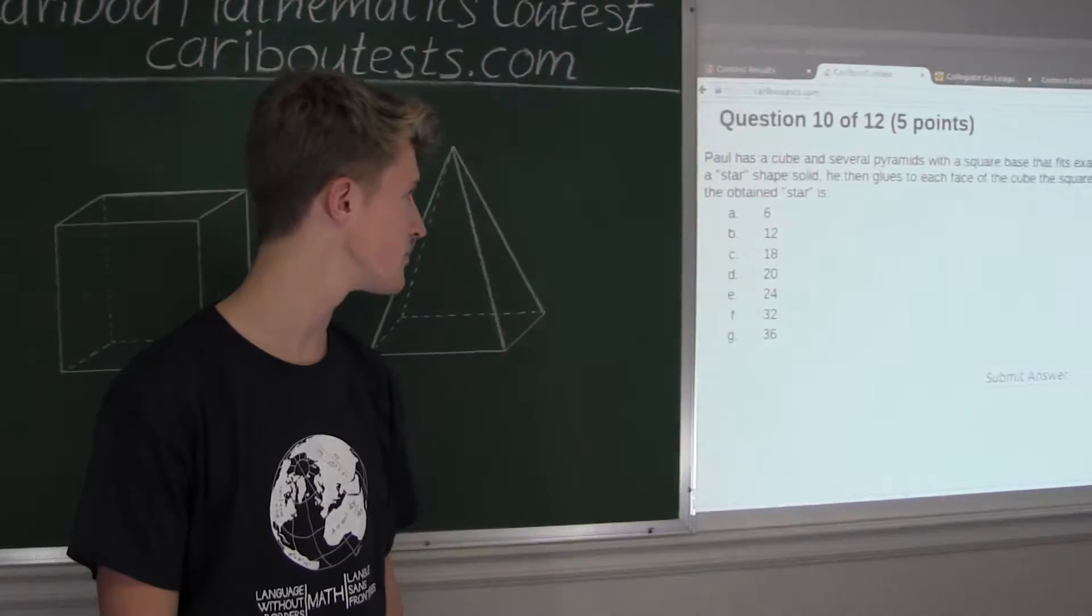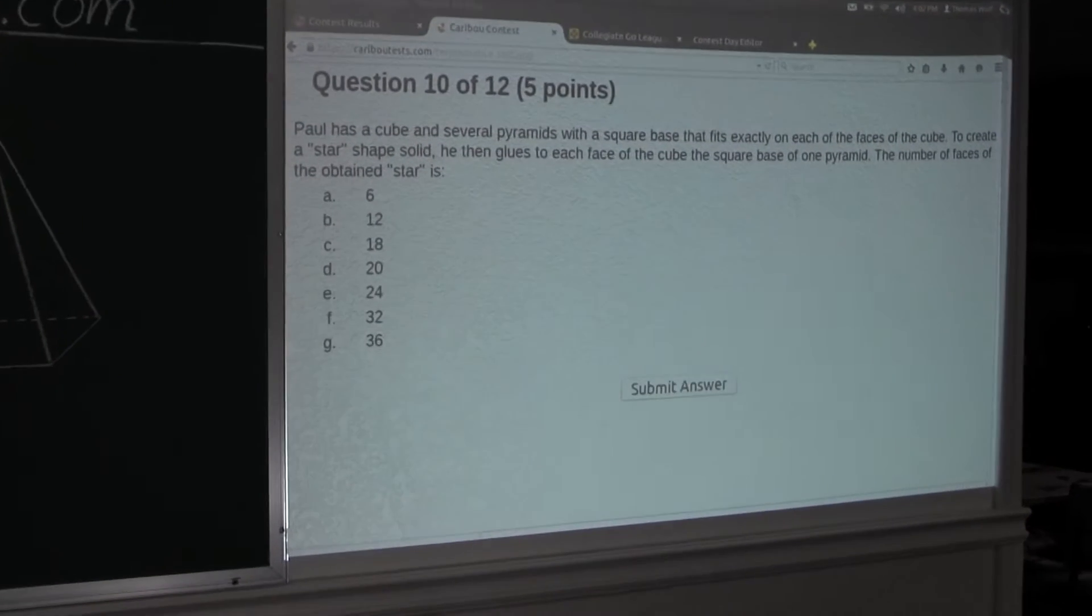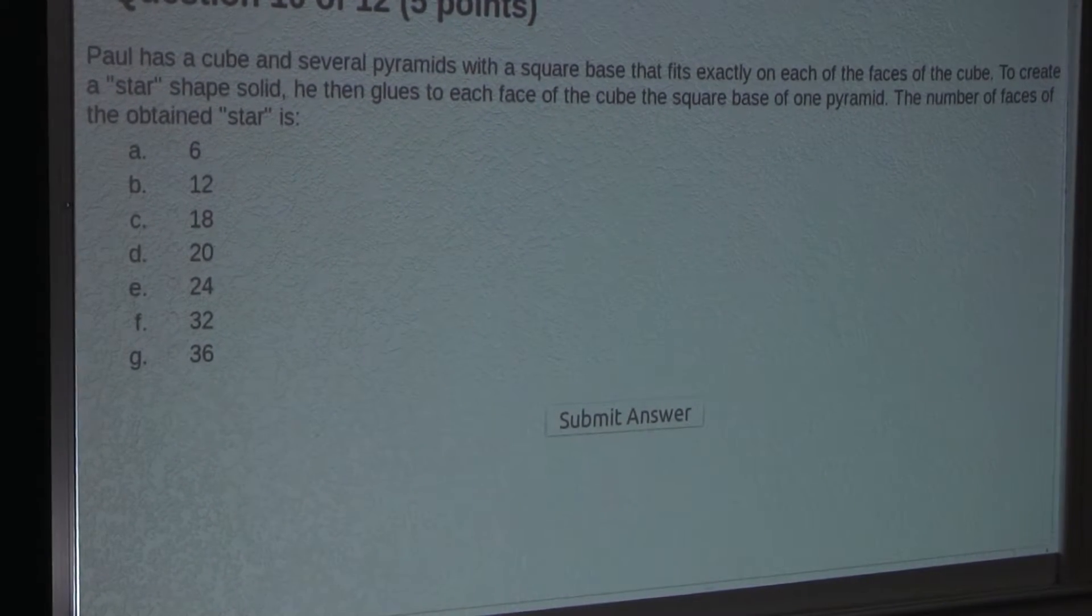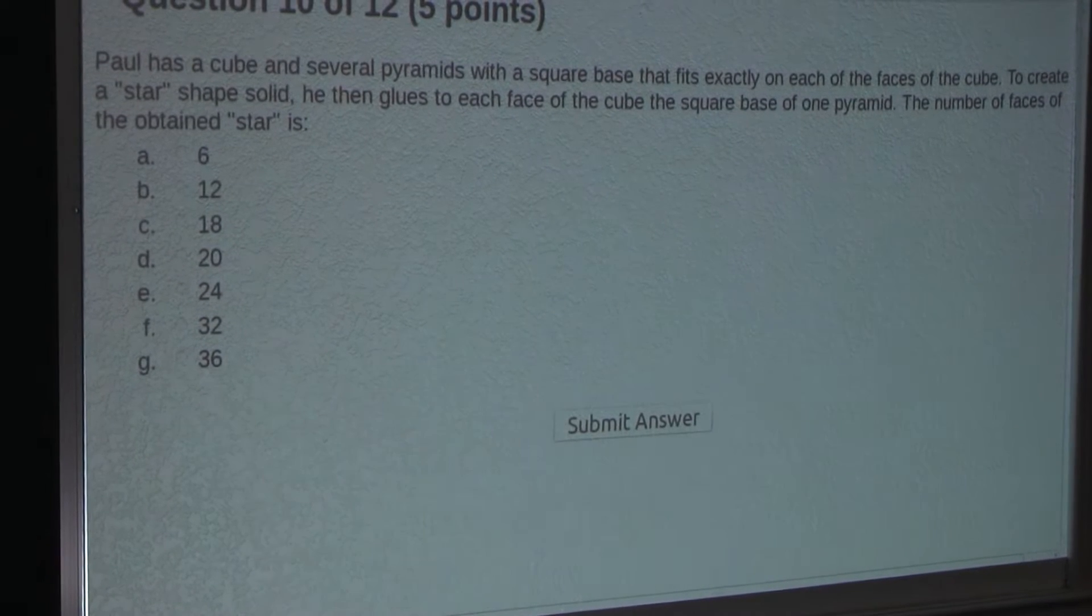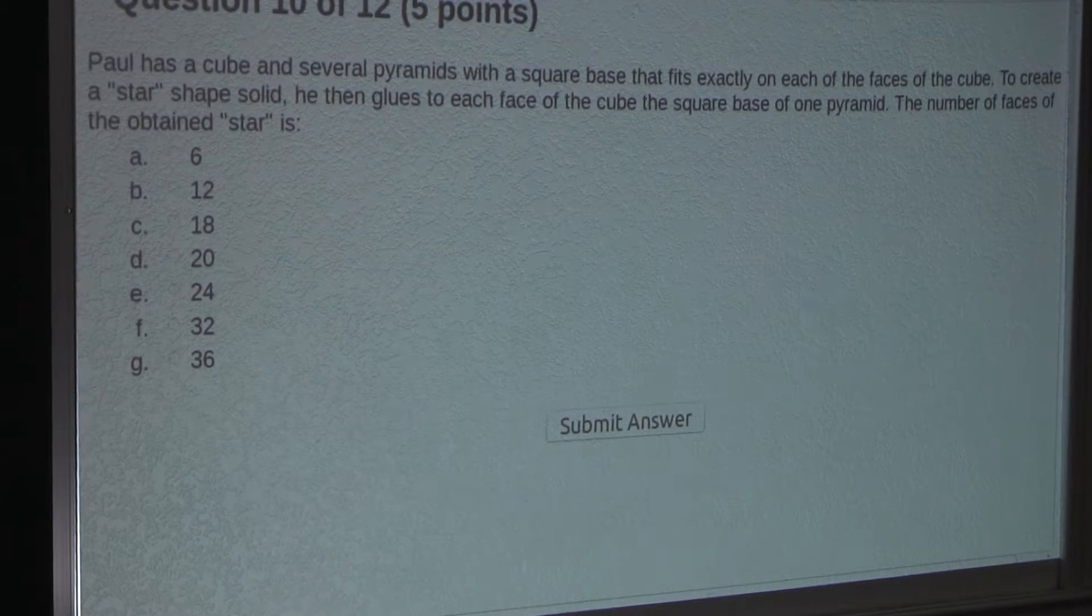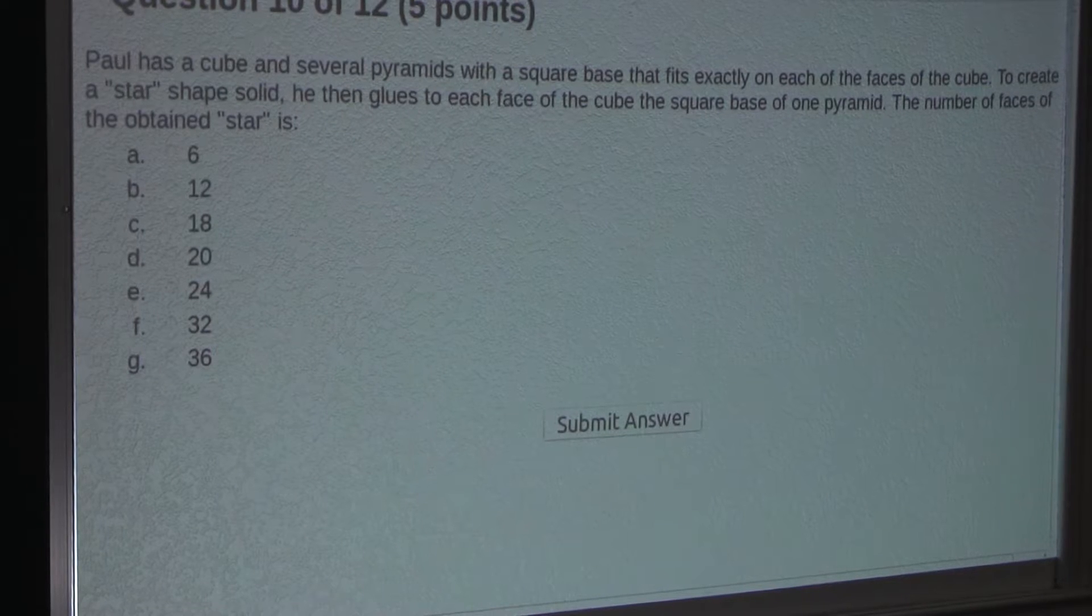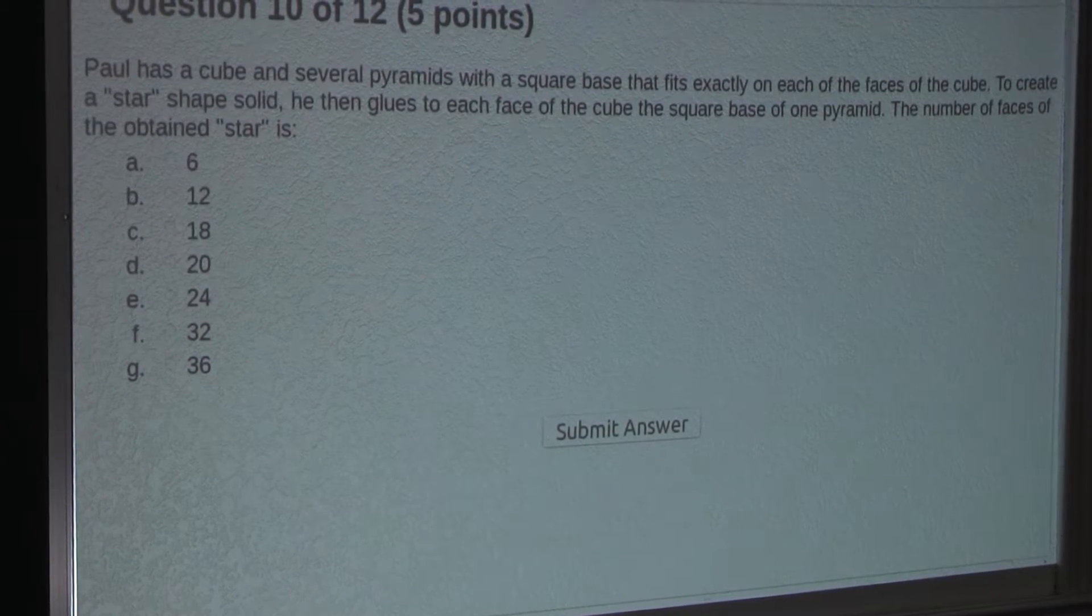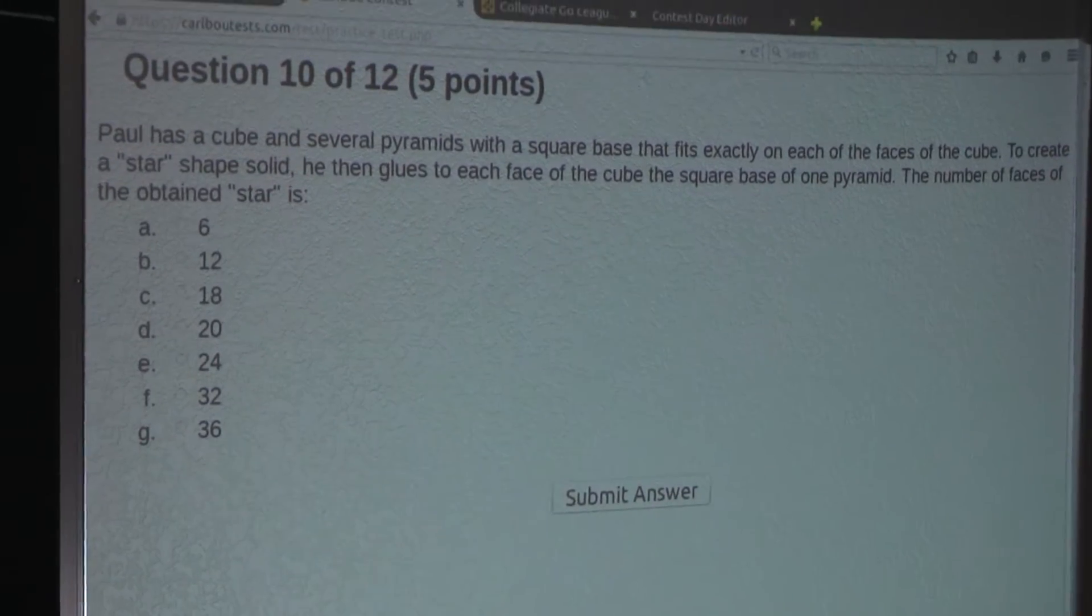So the question is: Paul has a cube and several pyramids with a square base that fits exactly on each of the faces of the cube. To create a star-shaped solid, he then glues to each face of the cube the square base of one pyramid. The number of faces of the obtained star is...